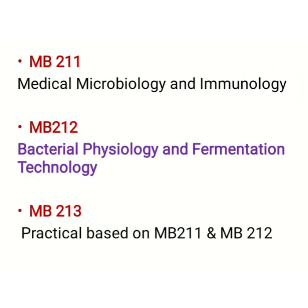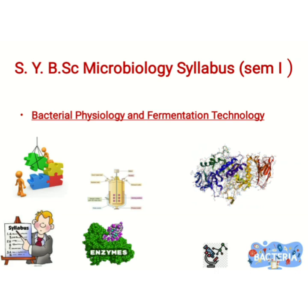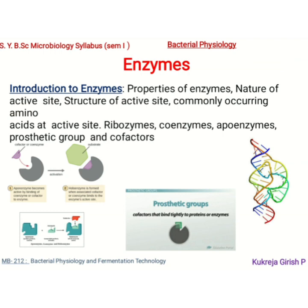As we have discussed earlier, the core structure comprises of two theory papers and one practical course. In the earlier lecture, we discussed the Medical Microbiology and Immunology course. Today, we will be talking about MB212 Bacterial Physiology and Fermentation Technology. There are two credits — one deals with bacterial physiology and the second deals with fermentation technology.